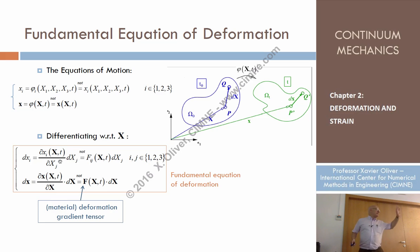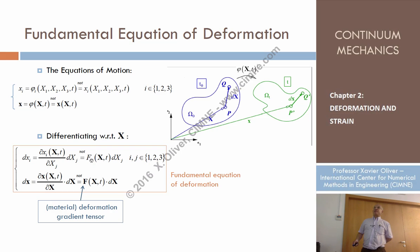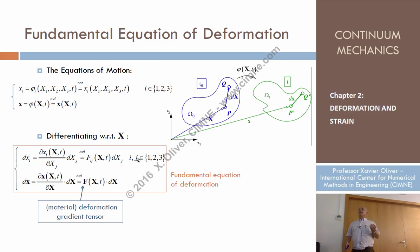Now let's define an entity whose component ij is the partial derivative of xi with respect to capital XJ. This is called Fij, which depends on capital X and T. So we can say: differential of xi equals Fij times differential of capital XJ, for i, j equal 1 to 3. What is the expression in compact notation?